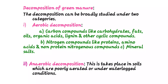Now, decomposition of green manure. There are two types: aerobic and anaerobic. In aerobic decomposition, green manure crops applied to the soil undergo a series of biochemical changes and nutrients become available to plants; humus is also synthesized. The plant material contains numerous compounds — for decomposition purposes, three groups: carbon compounds (carbohydrates, fats, oils, organic acids, lignin — which is slowly decomposed — and other cyclic compounds), nitrogen compounds (proteins, amino acids, non-protein nitrogenous compounds), and mineral salts.